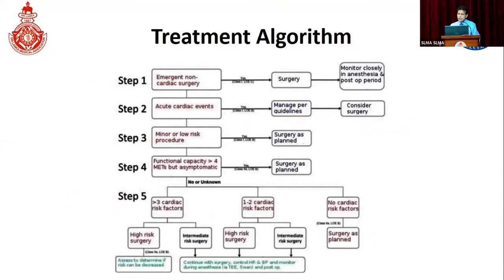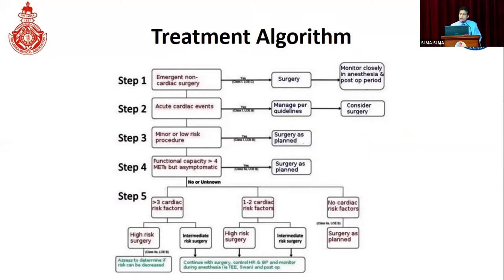The key question is what we should do when a patient comes, as it depends on the risk of the patient as well as the urgency and requirement of the surgery. If it is a life-threatening emergency and urgent surgery is essential to save the life, we have no choice but to proceed. We must take all precautions during surgery and the post-operative period, and discuss with the surgical team and family.